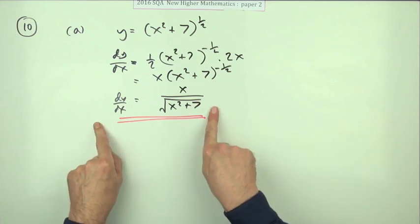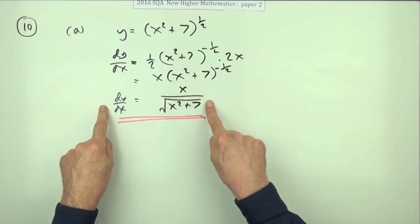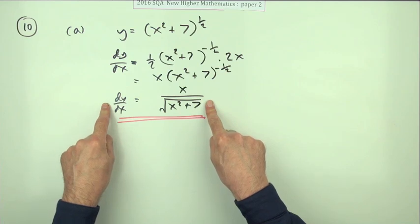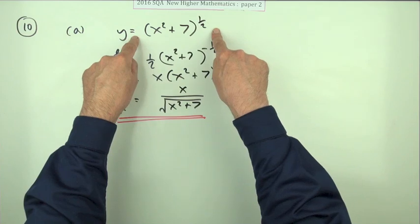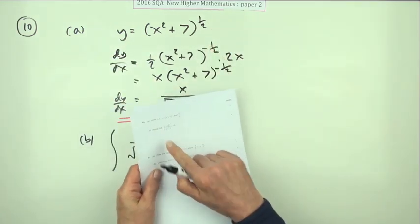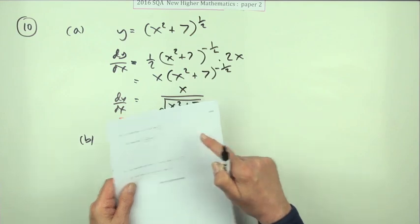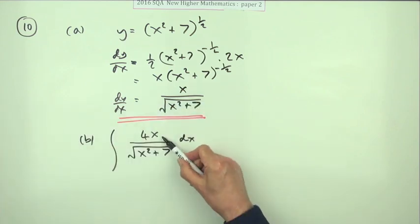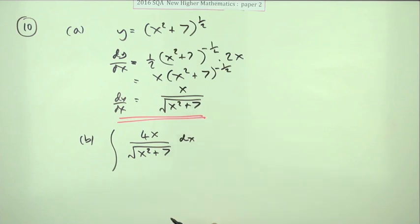And of course, what's happening here is, if you were to see that as the derivative, you would know that if you were to integrate it, it would go back to this. So when in part B, it says, hence find this integral, and you notice that this is the same as that, apart from a multiple,